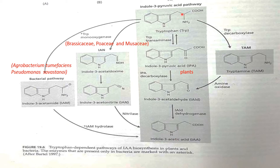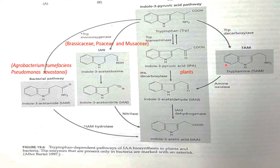There is another pathway where tryptophan is converted into tryptamine with the help of the enzyme tryptophan decarboxylase. The enzyme amine oxidase then converts tryptamine into indole-3-acetaldehyde and then to indole-3-acetic acid. This pathway is called the TAM pathway because the first intermediate formed from tryptophan is tryptamine.